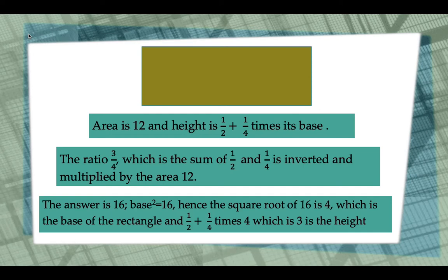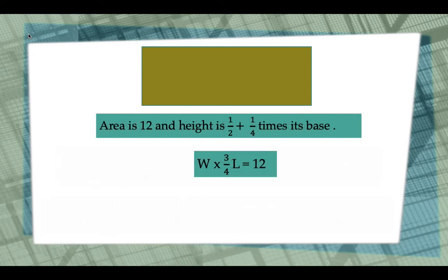And 1/2 plus 1/4 times 4 which is 3 is the height. The entire process is similar to the process in solving the problem using the algebraic equation where we use width times 3/4 length equals 12. Though, ancient Egyptians did the solution without using a letter for the unknown.